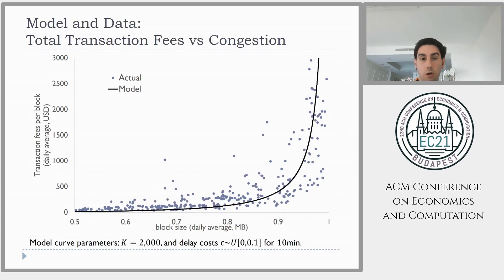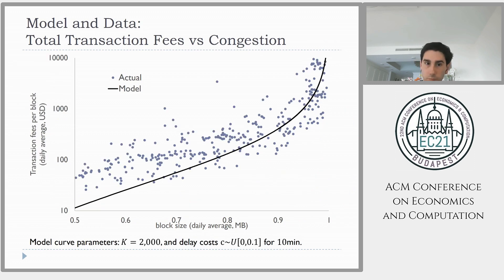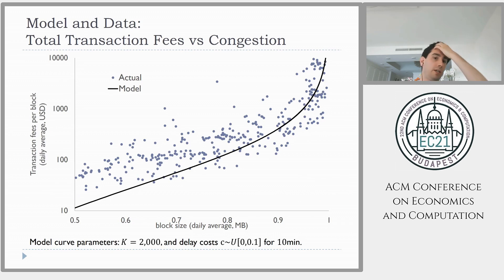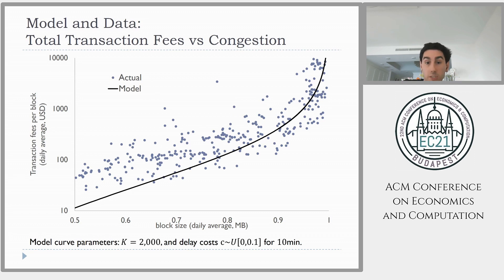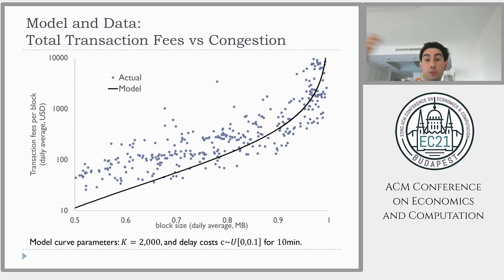Zooming in on the more congested regime with the vertical axis on a log scale, you can see that transaction fees start rising well before the system hits capacity. Once you reach 70–80% utilization, you already start getting backlogs, delays, and competition for priority, and the system starts raising revenue from users who are time-sensitive and unwilling to wait.